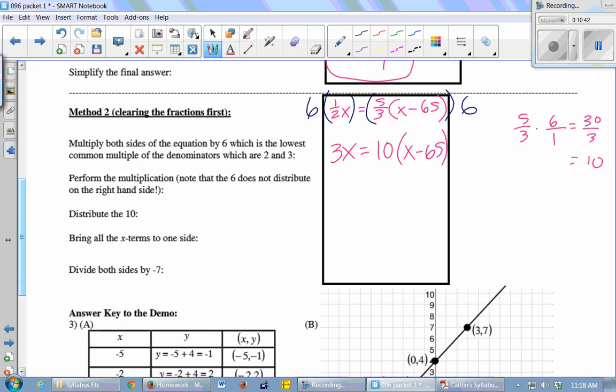So now I have no more fractions, and I can solve this without having to do so much fraction arithmetic. So now I just have 3x, distribute my 10, and I get 10x minus 650. That's when I did the times the x minus 65. Then I'm going to bring all my x's to one side. So 3x minus 10x is negative 7x. And I'm left with a negative 650 over here. Divide both sides by negative 7. And we get x equals 650 sevenths. Same answer as before.